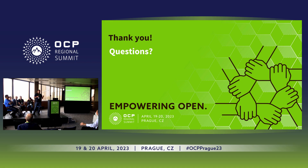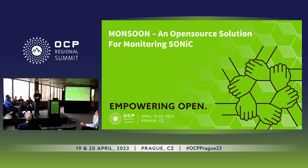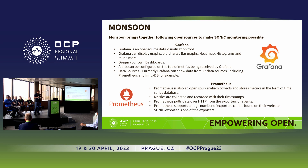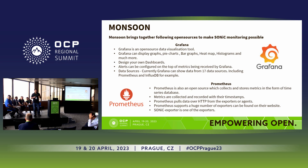We started this project called Monsoon. Using Monsoon, you can basically monitor the SONIC switches — it is specifically built for SONIC switches. Monsoon is an umbrella project which brings together several open source tools. Some of you may have already heard of Grafana and Prometheus. These are widely used tools for data monitoring and alerting. We are utilizing those tools in our project called Monsoon.